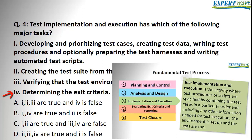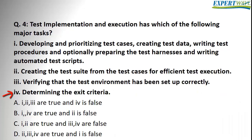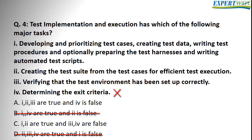Option four: determining the exit criteria. This is not actually part of the implementation and execution testing activity — it's actually part of the planning and control testing activity. So option four is wrong. Looking at the answers, options A and C are the ones that have option four as false. So we've now narrowed our options for the correct answer down to A and C.